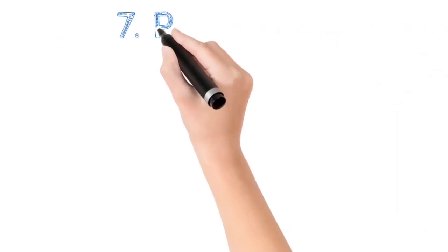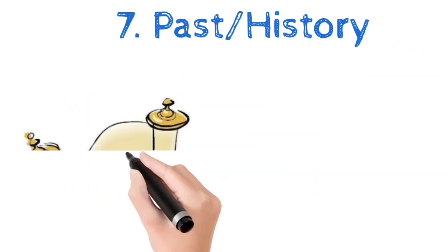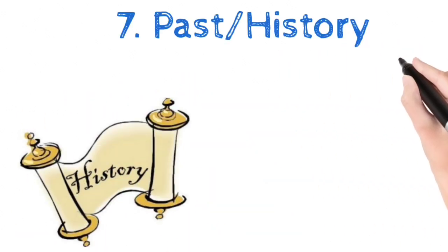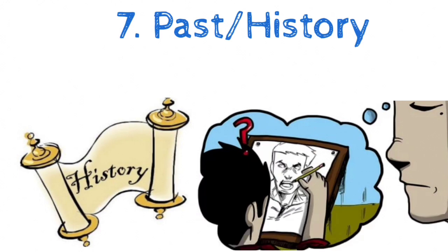Seventh is past. Aggression and mood swings can be the consequences of some past incidents or disease. So find it out first.